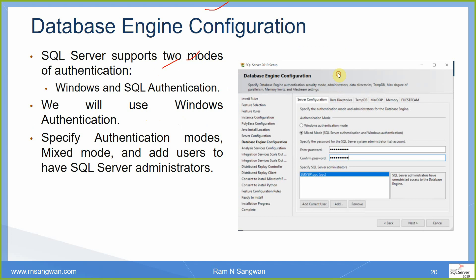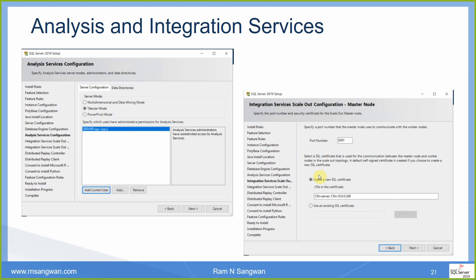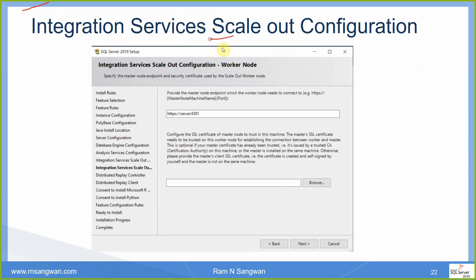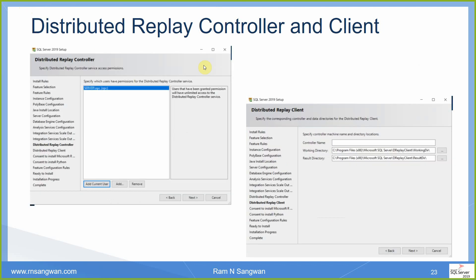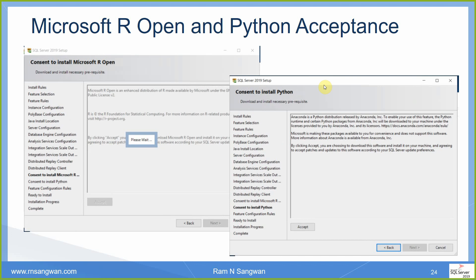Database Engine Configuration covers Mixed Mode, FileStream, data directories, TempDB, max DOP, memory configuration, authentication methods, and adding the default current user — don't forget to add this. Then Analysis Services, Integration Services, scale-out configuration, Distributed Replay Controller and client — add the current user. Integration Services is similar to Oracle Integration Cloud. Earlier it was called Data Transformation Services, which was a separate independent service for importing and exporting data similar to Oracle Data Pump. Then Microsoft R and Python acceptance.